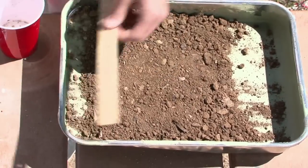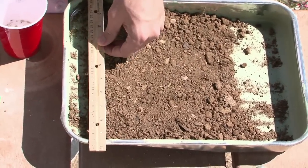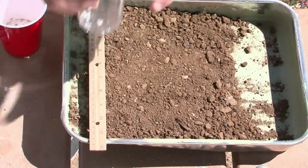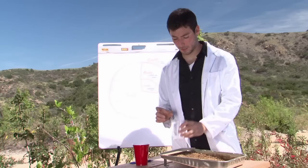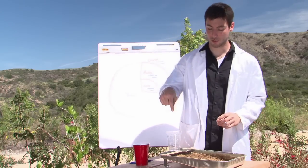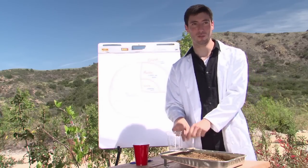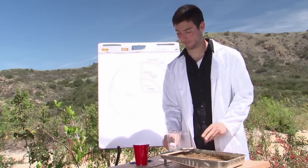Then take a ruler and position it over one end of your paint tray. Make sure you have a cup with a hole in the bottom, and center that right over the ruler so that the hole drops right down onto the top of the mound.